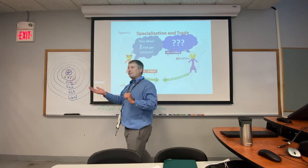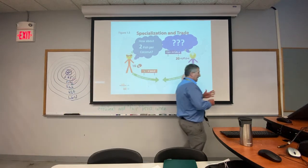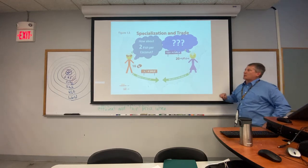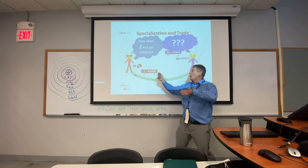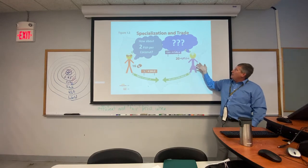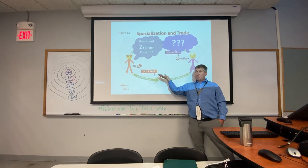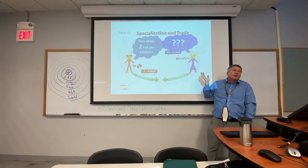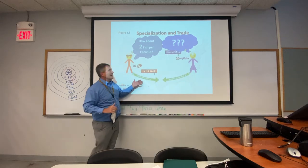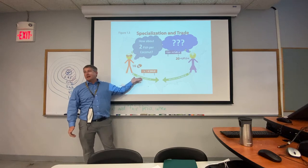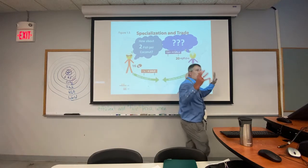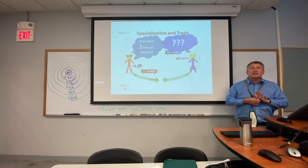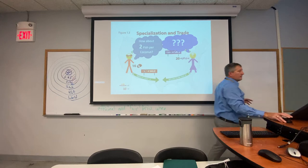Back to our story: there's a whole range of prices that would work. Would 2.1 fish work? Would 1.9 fish? Yes — there's a whole range. Jen is willing to pay up to 3 fish; Tom needs at least 1 fish, otherwise he can just do it himself. So anything between 1 and 3 makes both better off. Now we have a price range and a market is born — somewhere between 3 and 1 is a price that creates two winners in this market exchange.